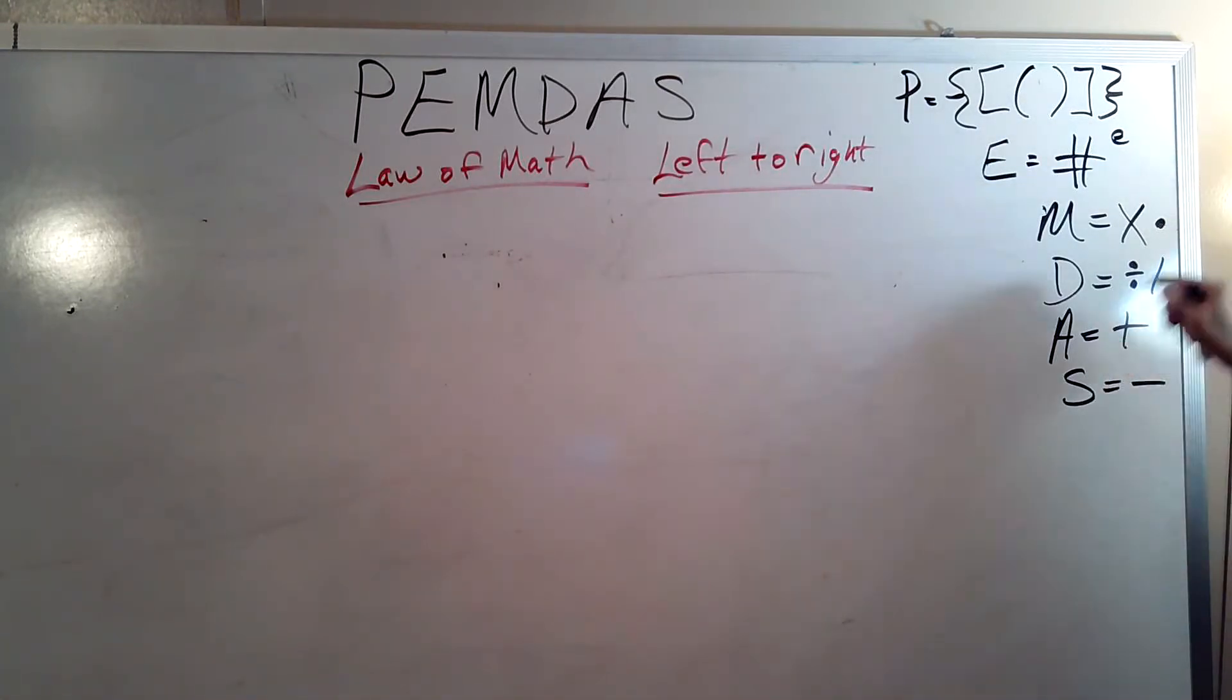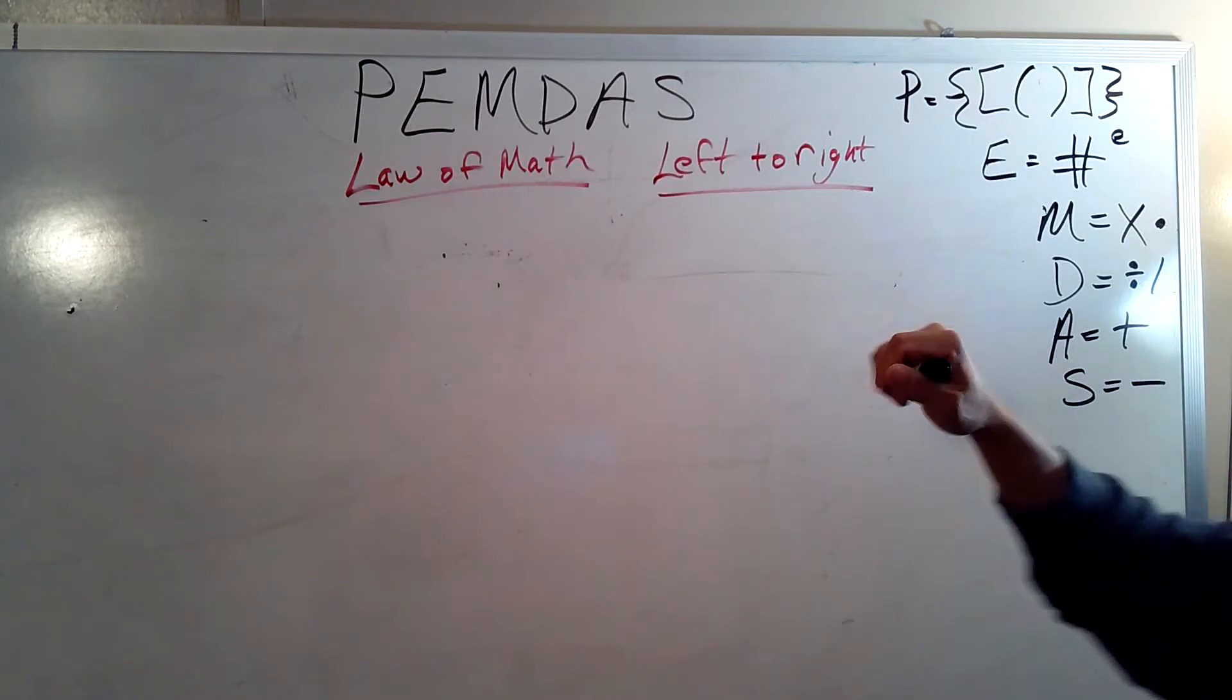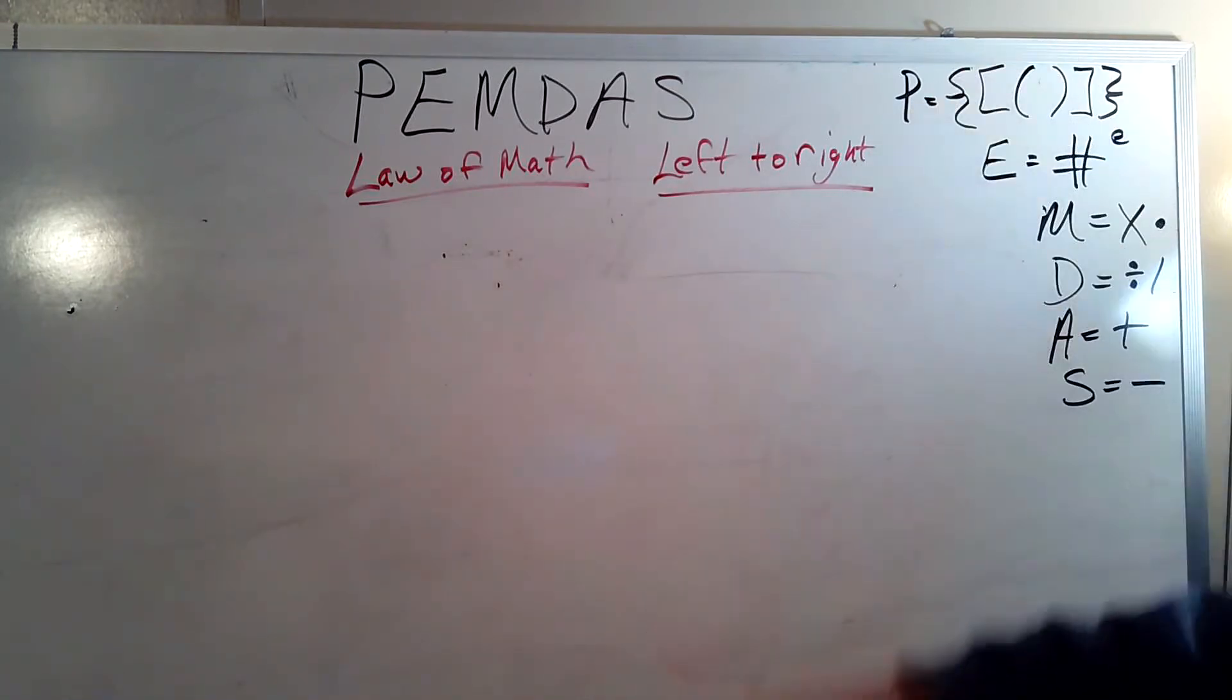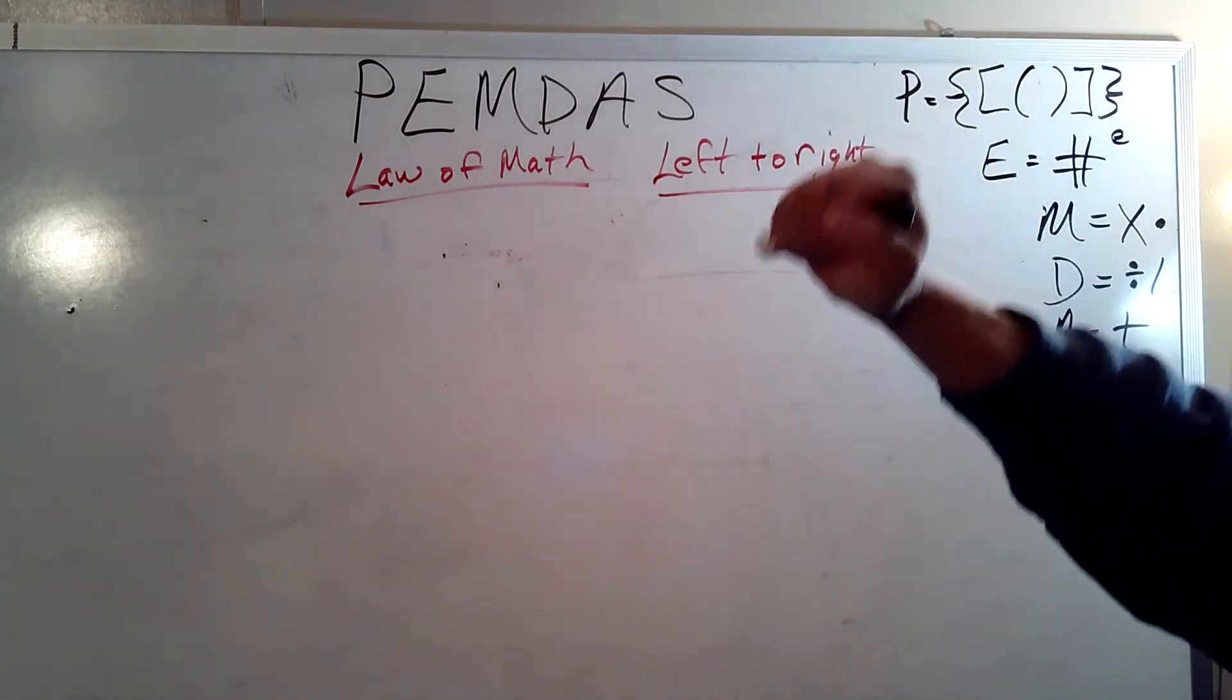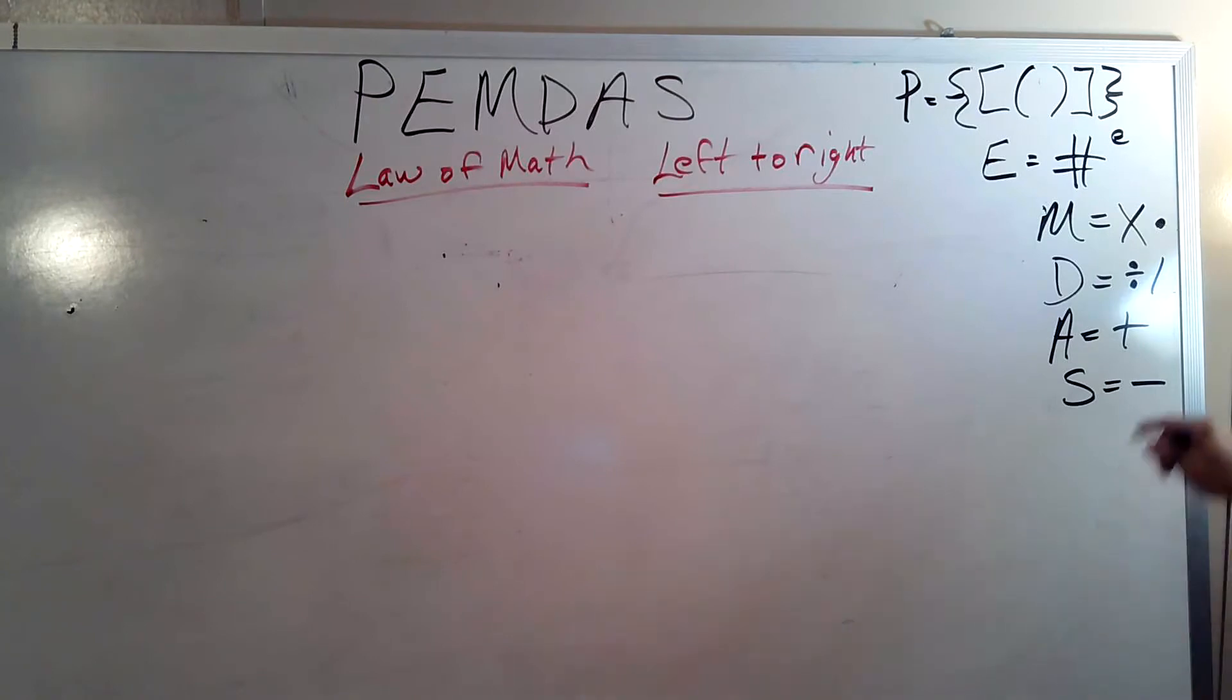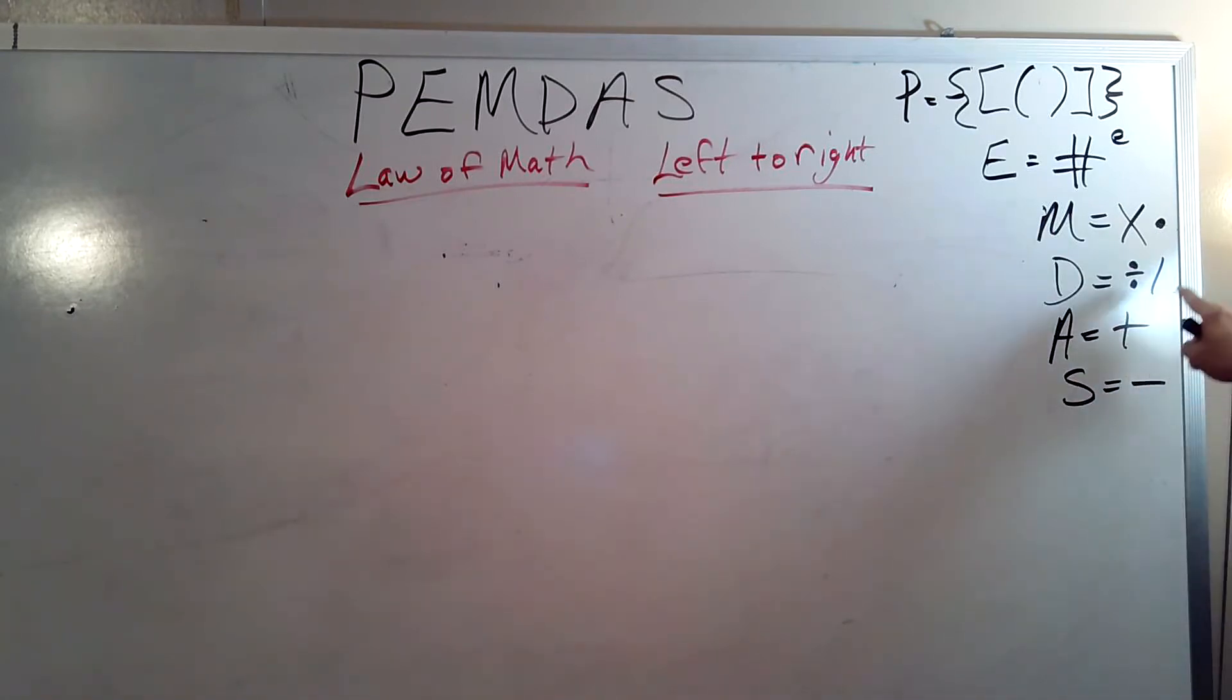And then you see an X here and you see a dot here. Now, this dot is up in the air. The dot is up in the air, then it means multiply like that X. But if the dot is down, down here, then it's a decimal. But if the dot's up in the air, then it's a multiply. Then the D, dear, stands for division and that's a slash. So that slash is also the same as that division sign. And I'm sorry, add is just still a plus and subtract is still a minus.